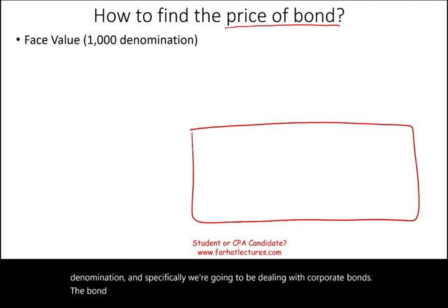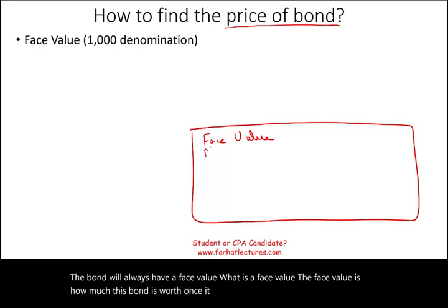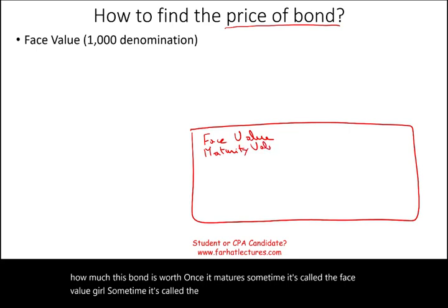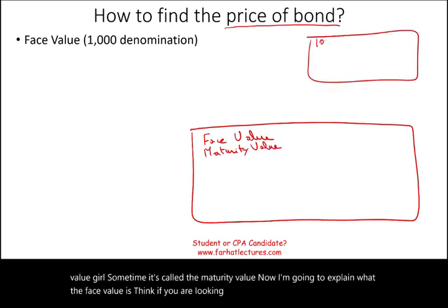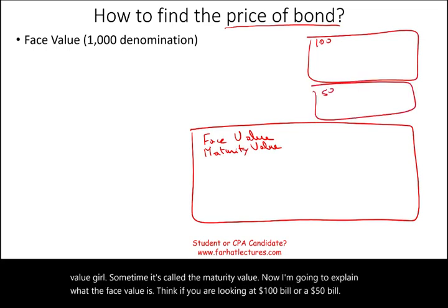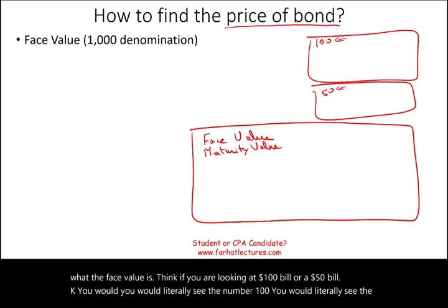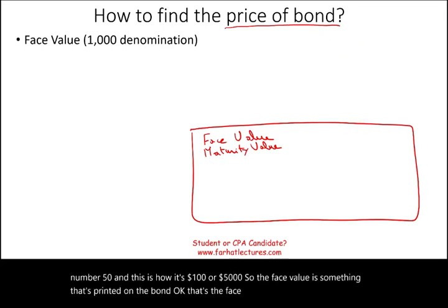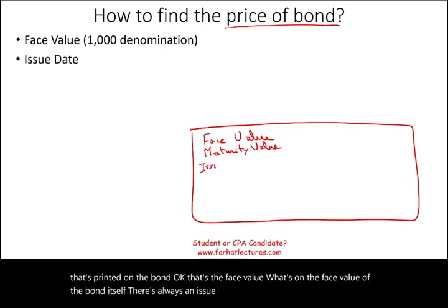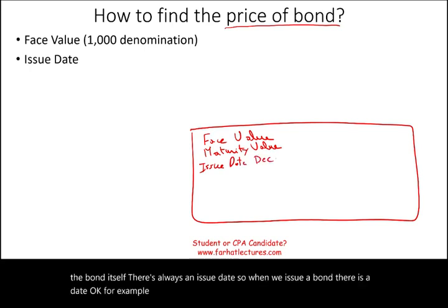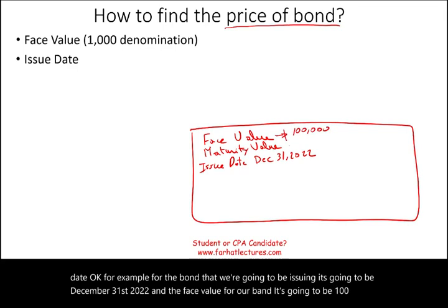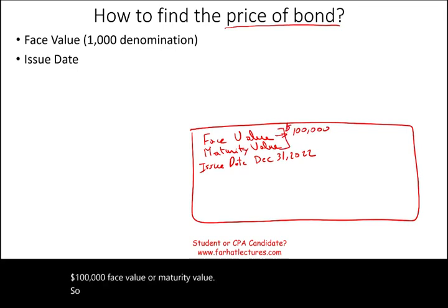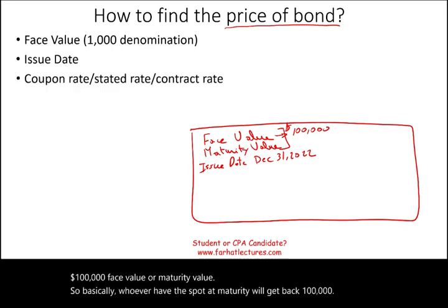The bond will always have a face value — how much the bond is worth once it matures. Sometimes it's called the face value; sometimes it's called the maturity value. Think of a $100 bill or $50 bill — you literally see the number printed on it. So the face value is something printed on the bond itself. There is always an issue date. For the bond we're issuing, it's going to be December 31st, 2022, with a face value of $100,000. Whoever holds this bond at maturity will get back $100,000.